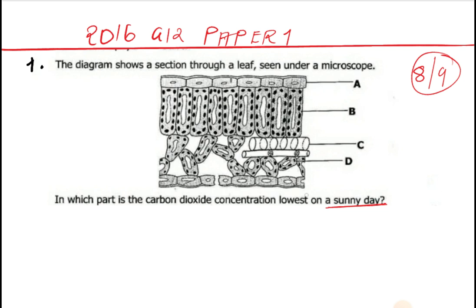The keyword here is sunny day. We know that during the sun there is a high rate of photosynthesis. If there is a high rate of photosynthesis, that means more carbon dioxide is being used. In this region here, the one we call the palisade cell,